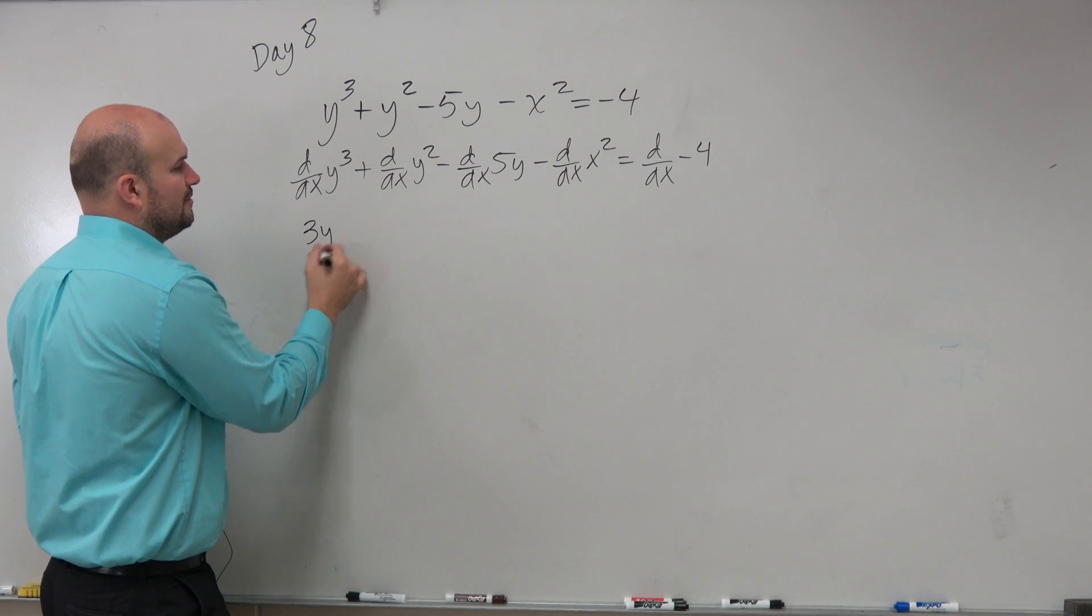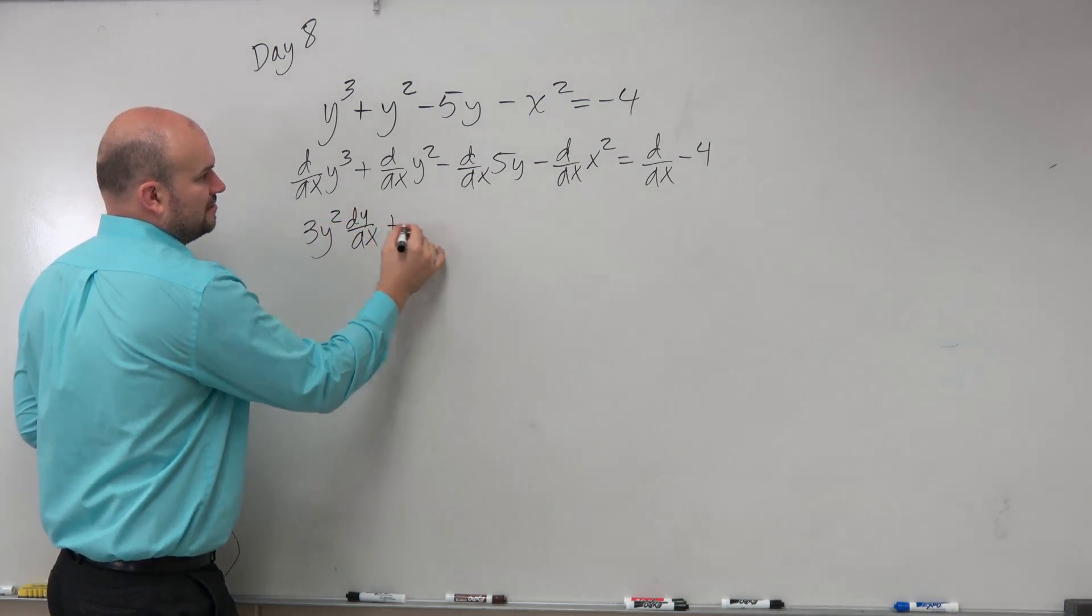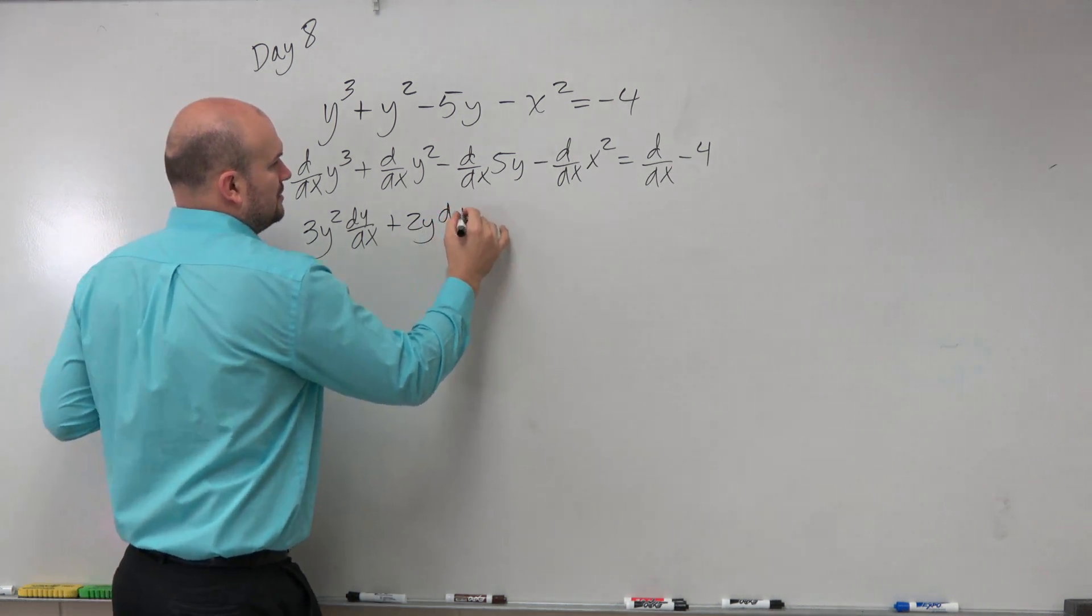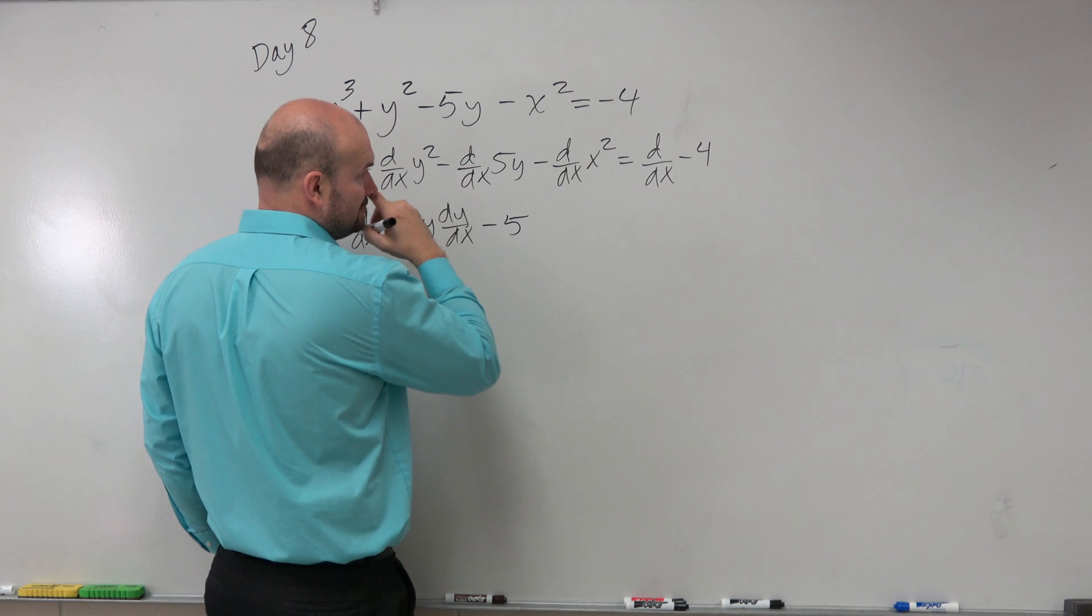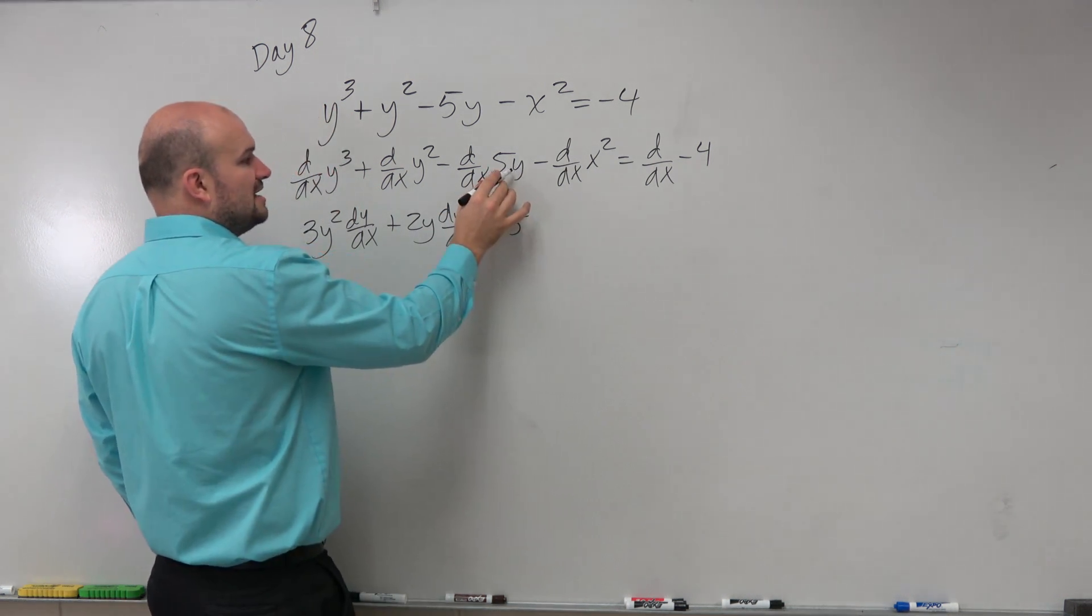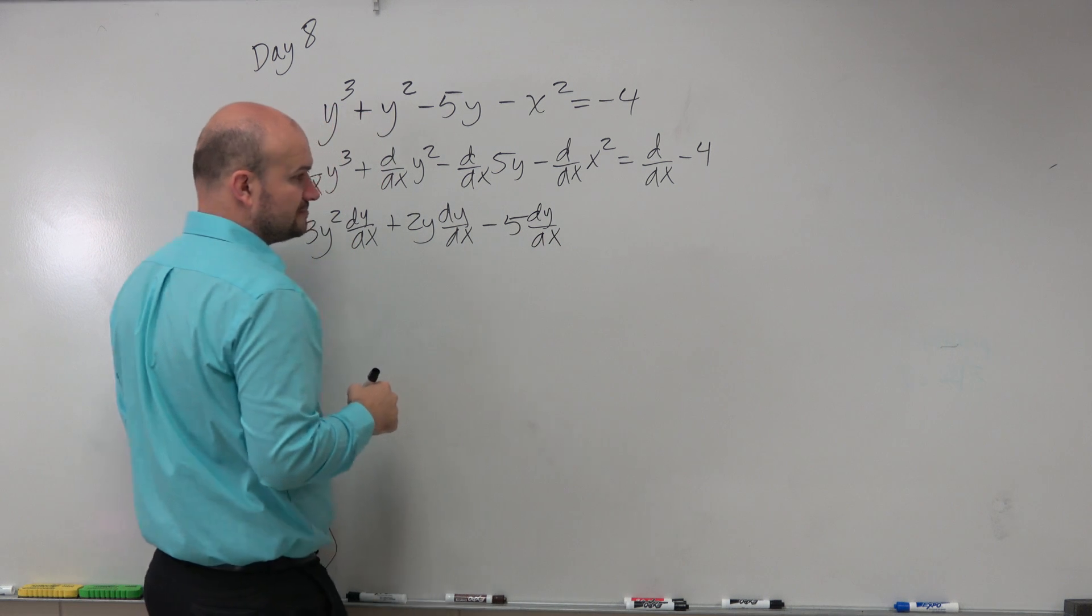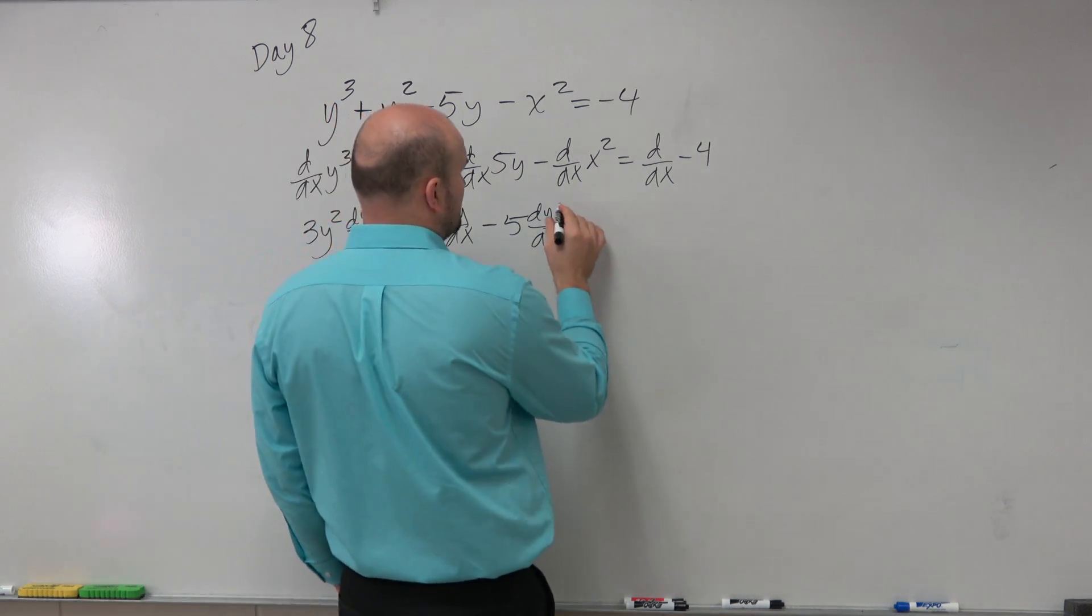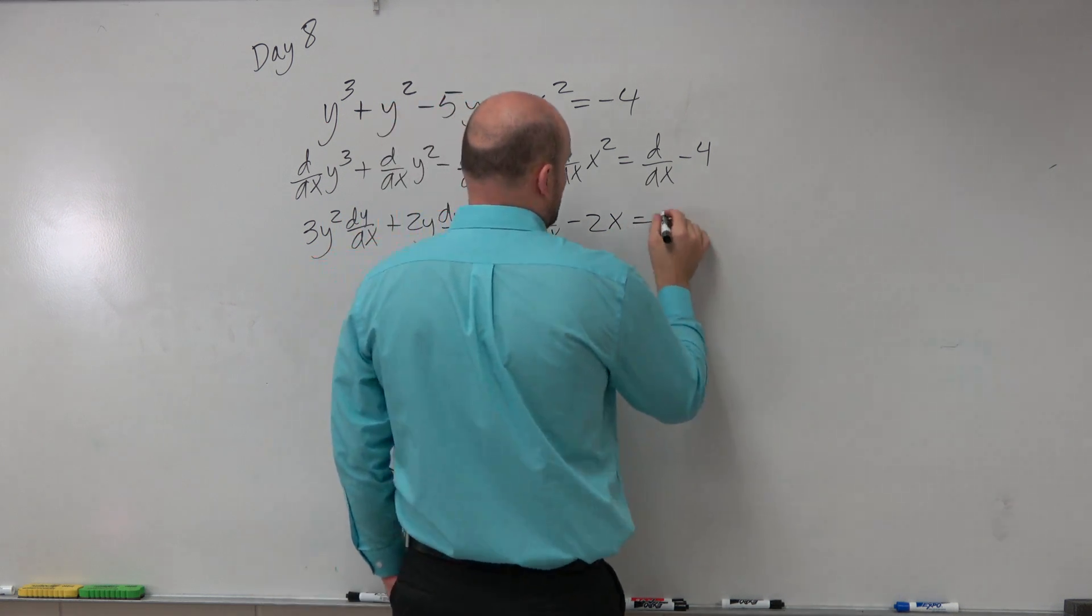This is going to become 3y squared dy over dx plus 2y dy over dx minus 5 dy over dx. And then over here, it's going to be minus 2x equals 0.